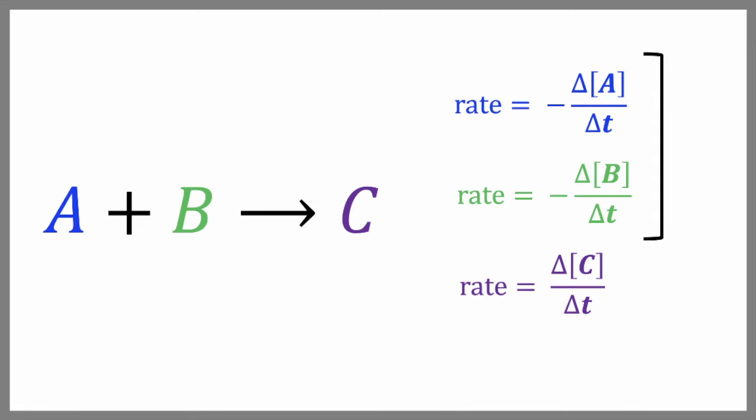The relationships between the rates of these species are very straightforward. For every mole of A that is used up, one mole of B is used up and one mole of C is formed.